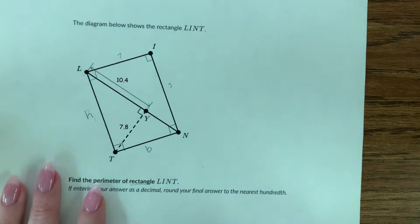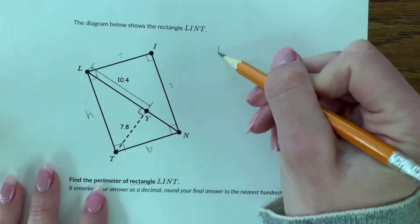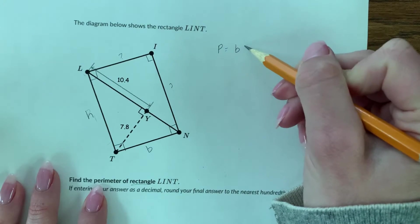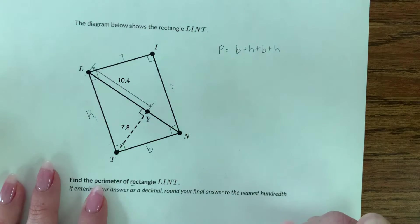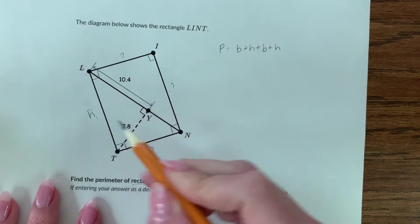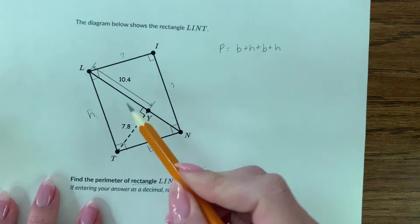We can go ahead and solve for them because we know that the perimeter is going to be base plus height plus base plus height. Height is pretty easy to solve for of this rectangle because you have two sides of a right triangle, so just do Pythagorean theorem.